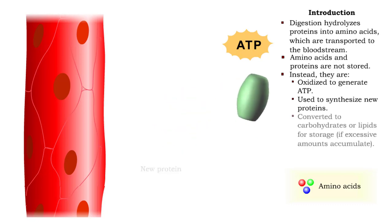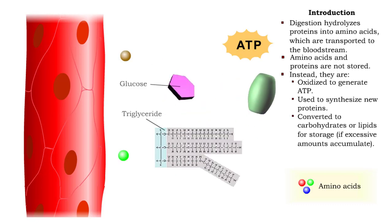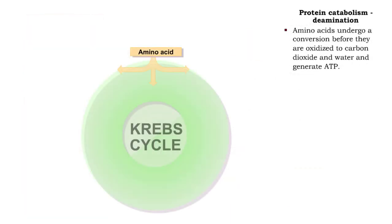If excessive amounts accumulate, amino acids are converted to carbohydrates or lipids for storage. Small amounts of amino acids are converted into substances that will be oxidized to carbon dioxide and water in order to generate ATP.